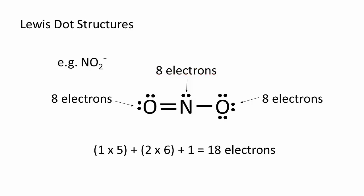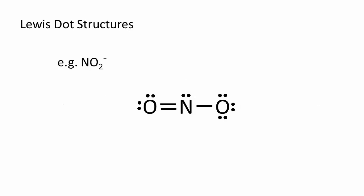A final note, the Lewis dot structure makes no attempt to predict the three-dimensional structure of the molecule. The Lewis dot structure for the nitrate anion can be drawn as linear, even though we will see in a later module that the nitrate anion is definitely not a linear molecule.